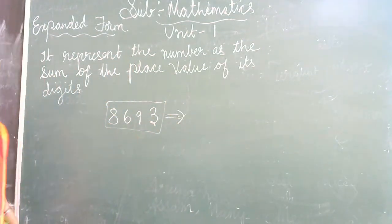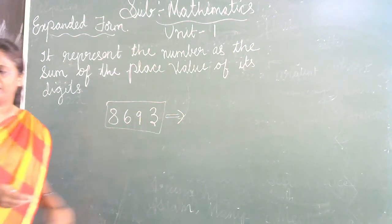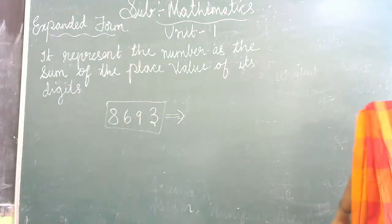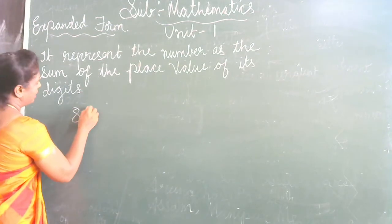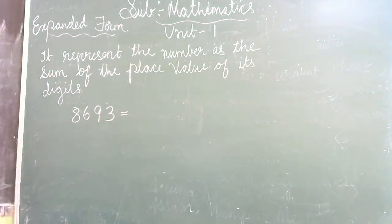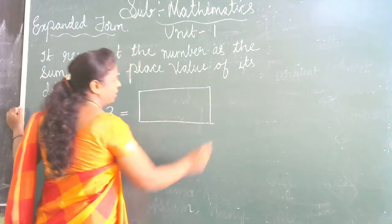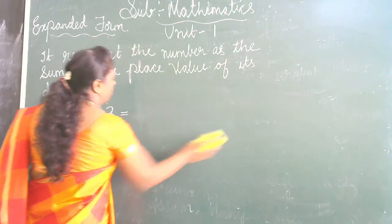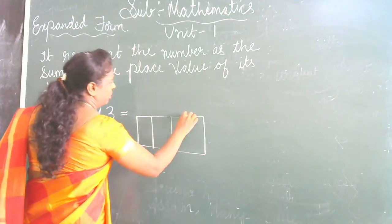How are we going to expand? Children, it's very easy. First, write the place values. There are four digits here. Any number — 8, 6, 9, 3. So when you write the expanded form, let's write the place values. There are 4 digits, so draw 4 marks: 1, 10, 100, 1000.